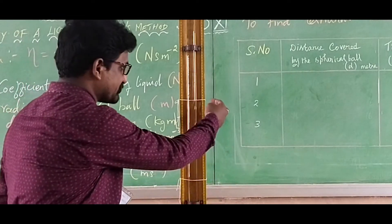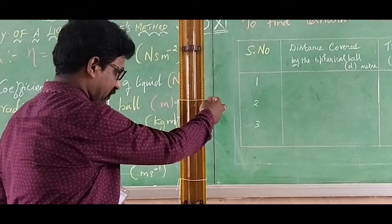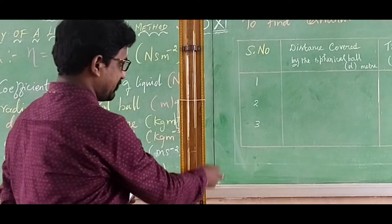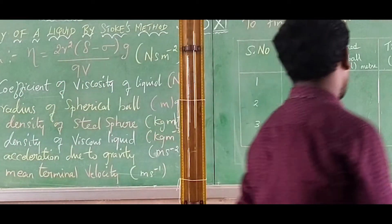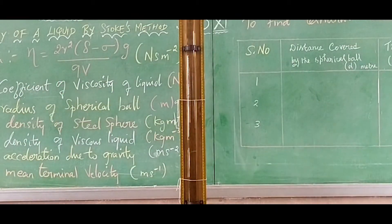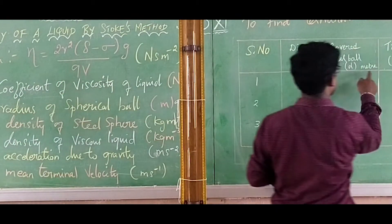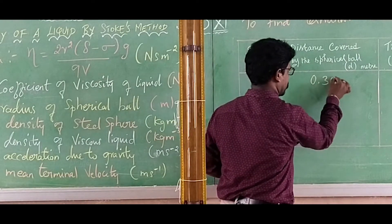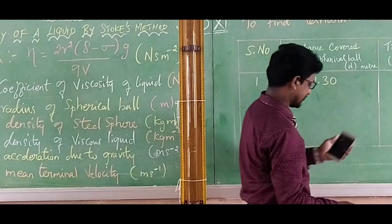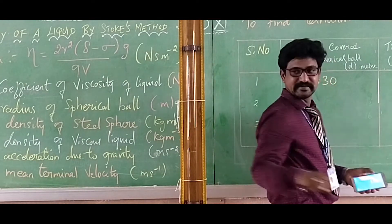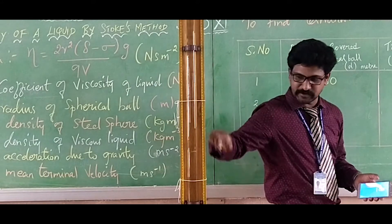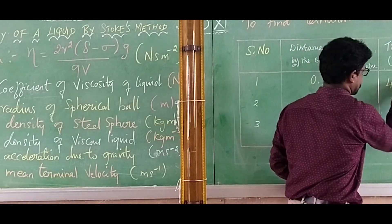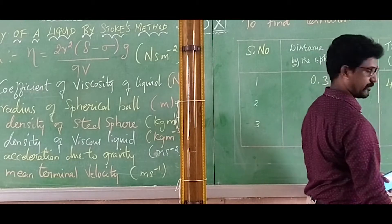The distance between reference point A and reference point B is 70 minus 40, which is 30 centimeters. In meters, the distance covered by the metallic ball is 0.30 meters. The time taken for the ball to travel this distance is measured by stopwatch as 4.56 seconds.